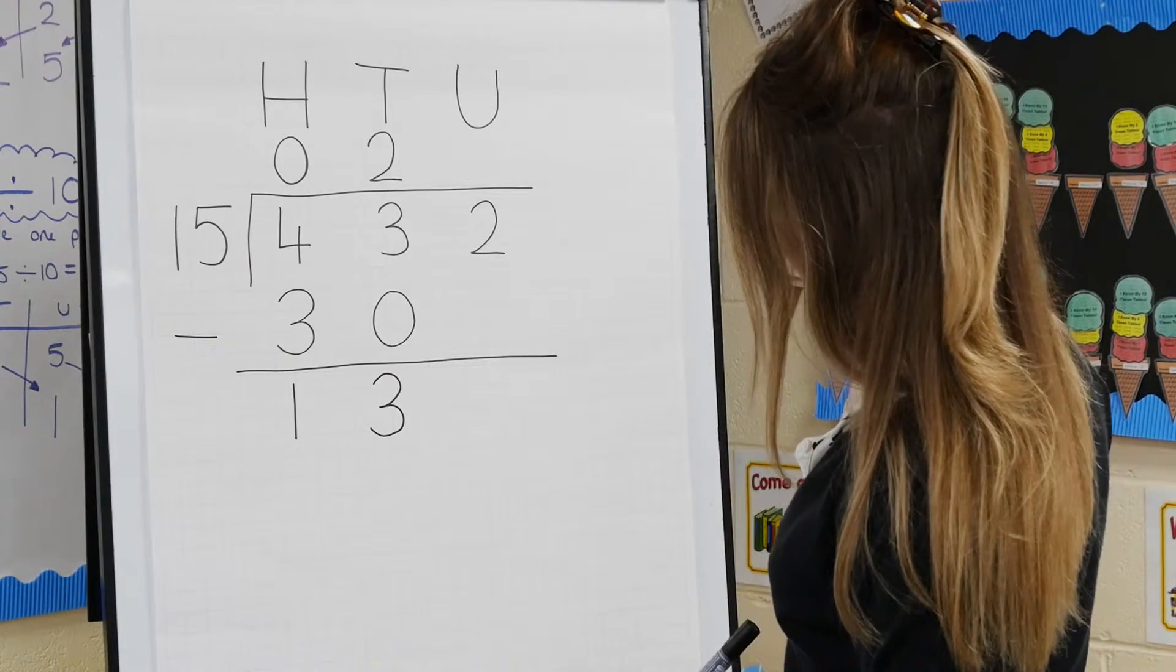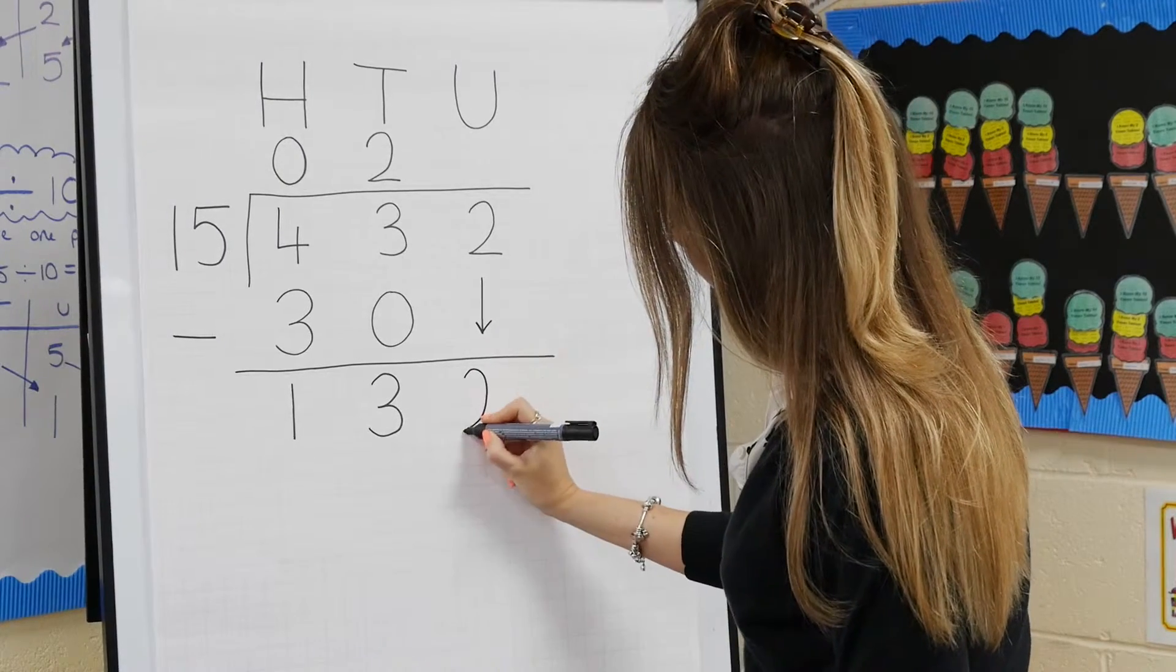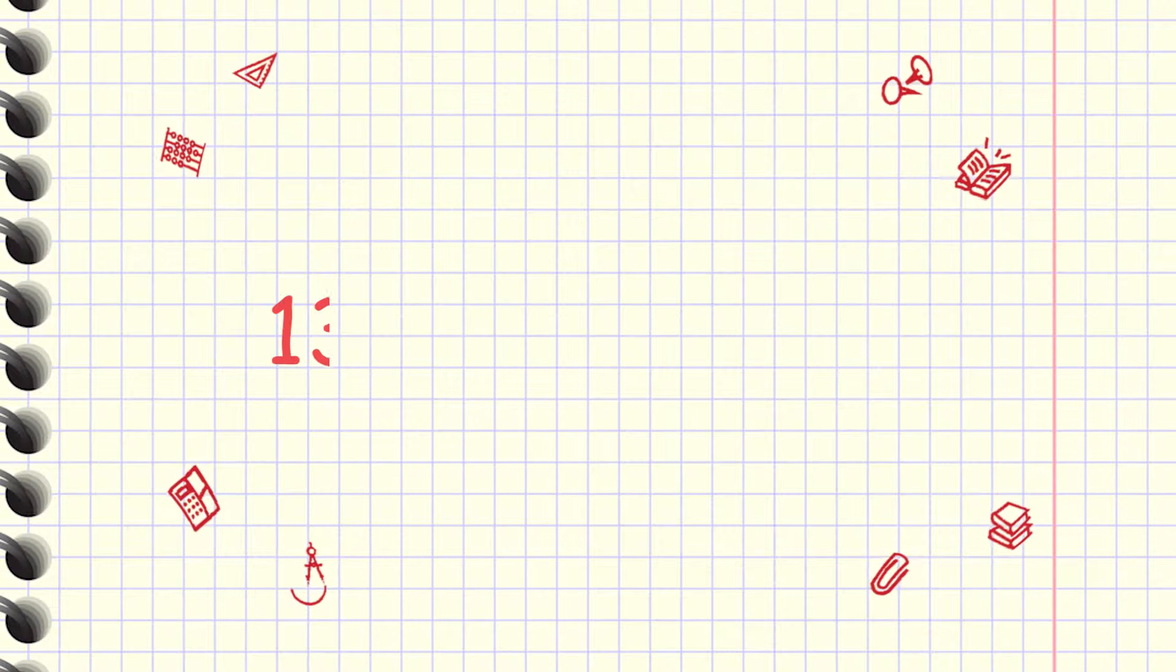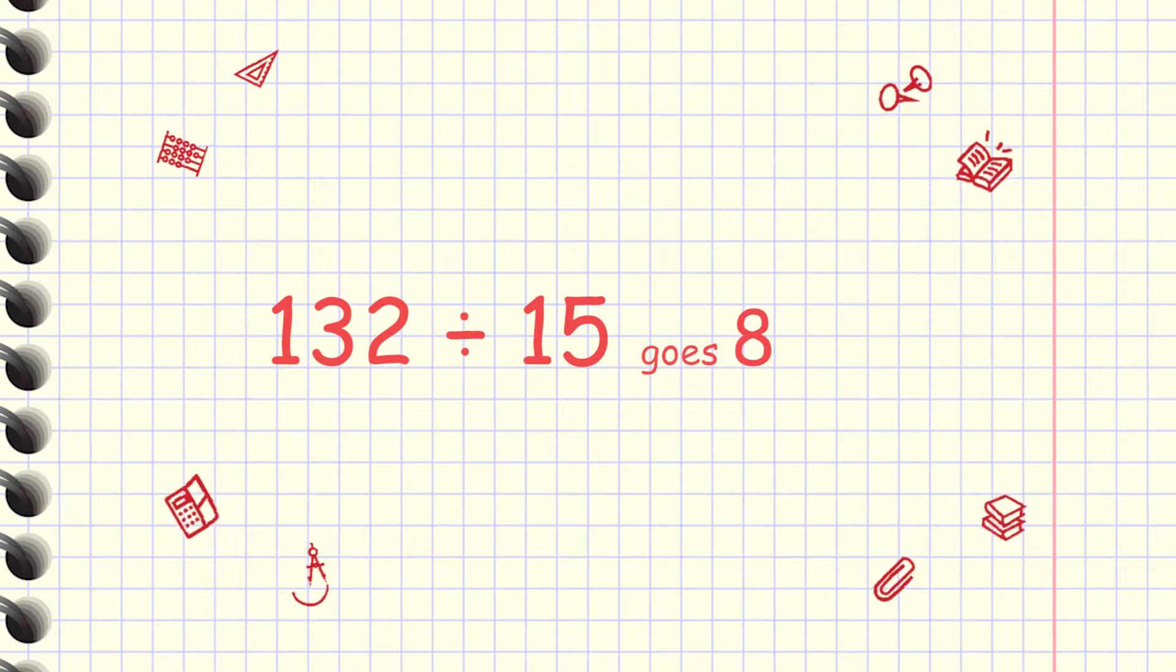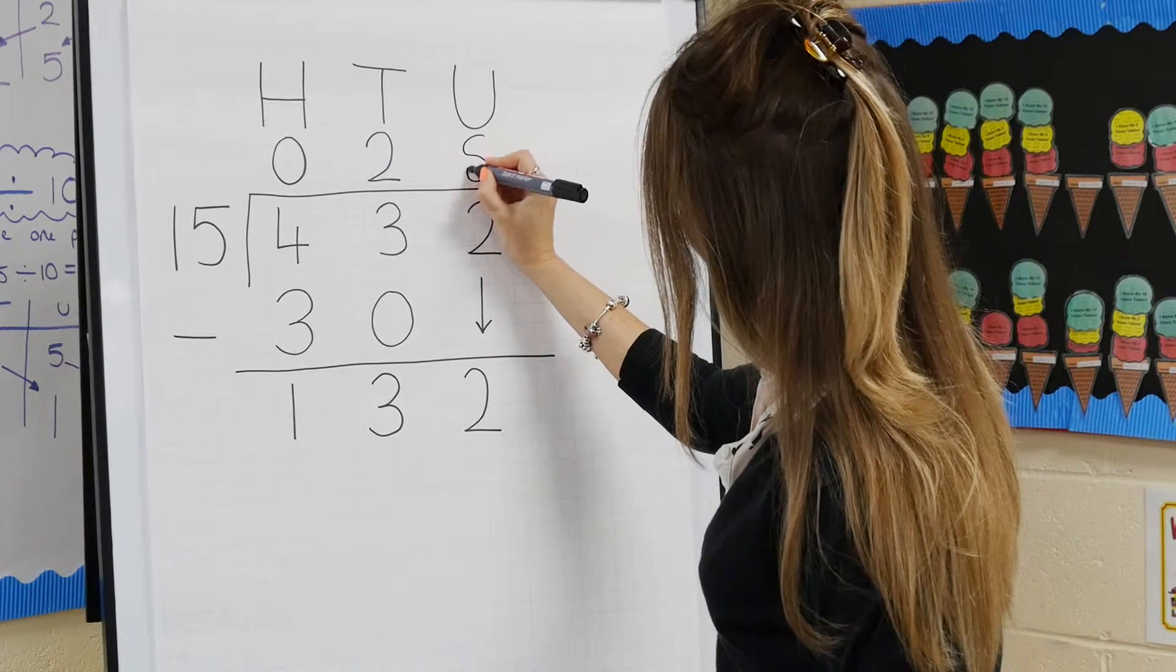Now bring down the 2 units in the units column and put it next to the 13 to make 132. Now divide 132 by 15, which goes 8 times. Put the 8 above the top line in the units column.